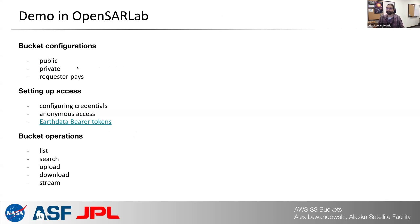There are a few different types of bucket configurations. You can configure your bucket to be public and available to anybody, or it can be private, only available to users you allow. There's also the way costs are handled for transferring data — it can be set up so the owner of the bucket pays for any data moved in or out, or the person requesting the data can have their AWS account charged for any networking fees incurred.